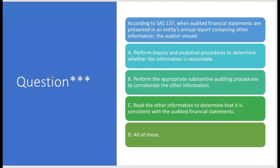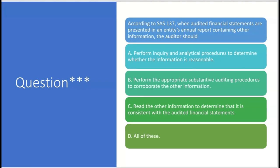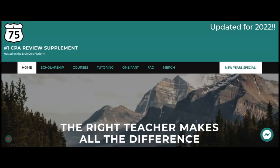According to SAS 137, when audited financial statements are presented in an entity's annual report containing other information, the auditor should do what? If you think you know, leave the answer in the comments section. Don't forget to like and subscribe — it helps the channel out a lot. If you need help with audit reporting or any part of the audit exam, go to CPAexamTutoring.com and get yourself on I-75, where the right teacher makes all the difference.